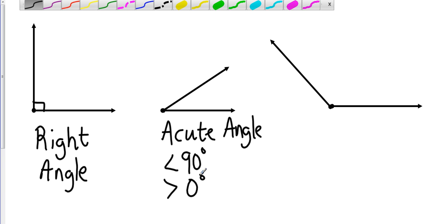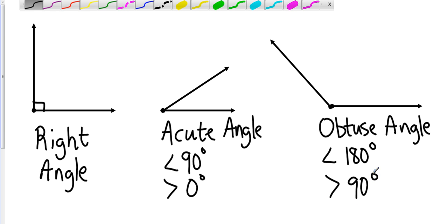And then I have an obtuse angle. And an obtuse angle is less than 180 degrees because if it was 180 degrees, that would make it a straight angle. And it is also greater than 90 degrees. So less than 180 and greater than 90. So right angle, acute angle, and obtuse angle.